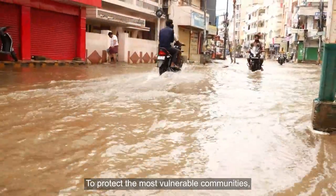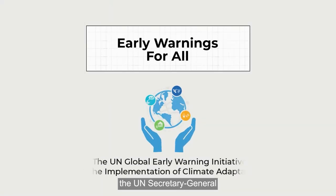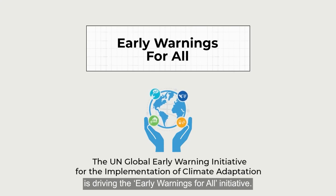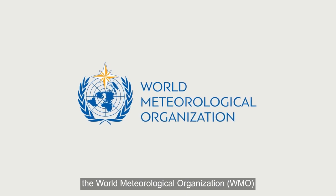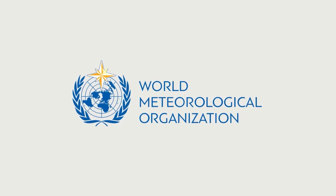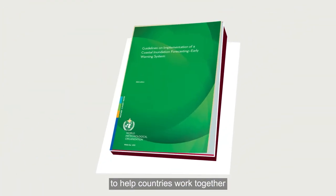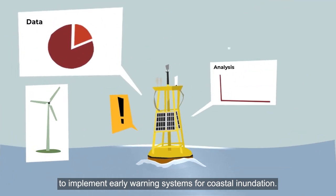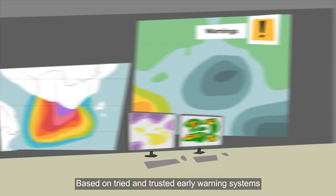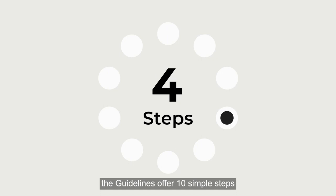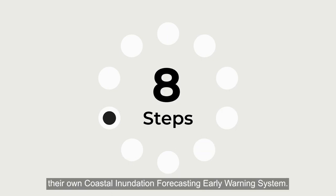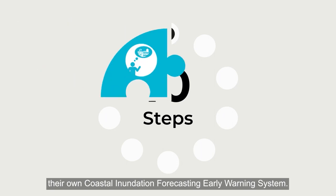To protect the most vulnerable communities, the UN Secretary-General is driving the Early Warnings for All initiative. As part of this, the World Meteorological Organization has completed a set of practical guidelines to help countries work together with donors to implement early warning systems for coastal inundation. Based on tried and trusted early warning systems already operating in some parts of the world, the guidelines offer 10 simple steps countries can use to establish their own coastal inundation forecasting early warning system.